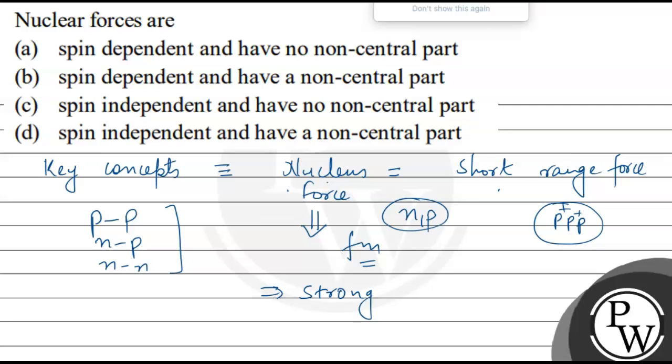And this force is called non-central force. This means that it is not just distance dependent. The central force is the example of the gravitational force. Coulombic force is the central force. But the nuclear force is non-central force.